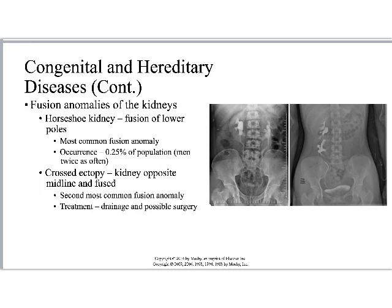Fusion anomalies: horseshoe kidney is fusion of the lower poles, giving roughly a horseshoe shape. The south poles of the kidneys are connected across the midline. This is the most common fusion anomaly, occurring in about 0.25% of the population, men twice as often as women. If the kidney moves over to the other side of the body, we call that crossed ectopy — the kidney is on the opposite side of the midline and fused. It's the second most common fusion anomaly and typically requires drainage and possible surgery. Horseshoe kidney, however, they generally just monitor and advise lifestyle changes.